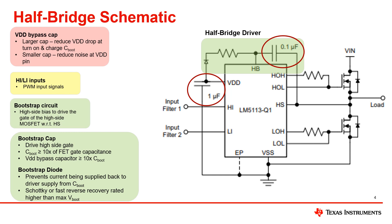For very high switching frequencies greater than 1 MHz, you can also add a low-value high-frequency bypass capacitor in parallel with the bootstrap capacitor. The bootstrap diode helps reduce the risk of current being supplied back to the driver supply from the bootstrap capacitor, which is why we recommend using a fast reverse recovery or Schottky diode rated higher than the max bootstrap voltage. When using an external bootstrap diode, the use of a bootstrap resistor can help reduce the current on that diode. Also keep in mind that some of our devices have internal bootstrap components, so it is important to check the device specifications before you begin designing your bootstrap circuit.